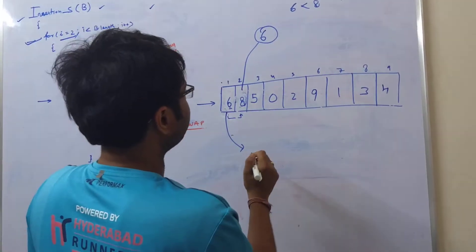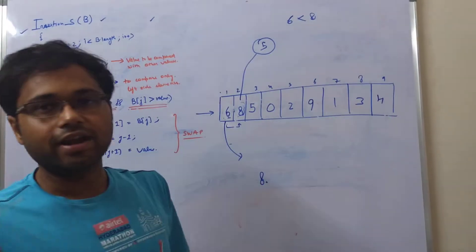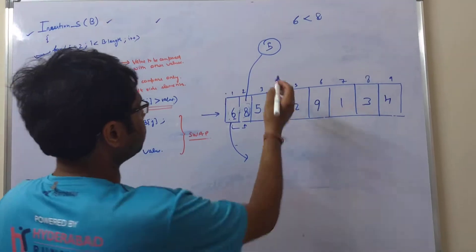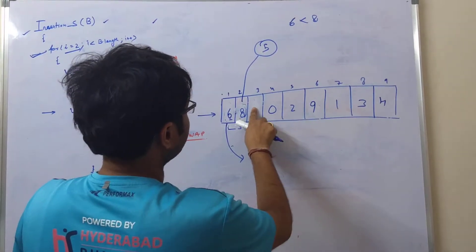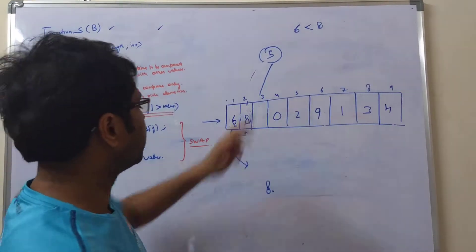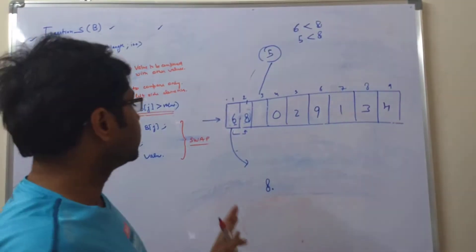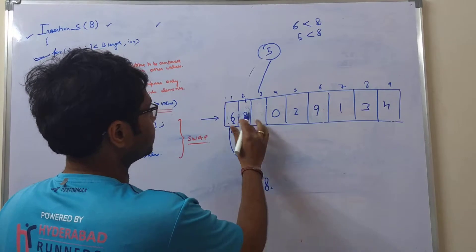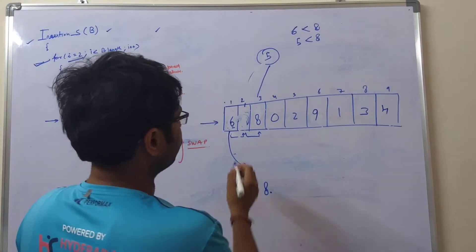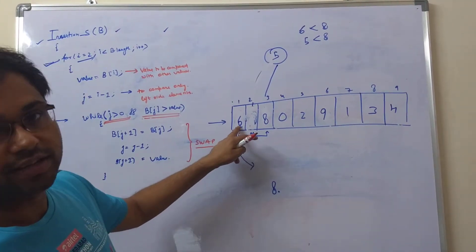Now we take the third number, 5, in our right hand. We will compare it with the already sorted numbers in our left hand. Five is less than 8, so we shift 8 to the right. But we do not place 5 immediately — we also compare it with 6. Five is less than 6 as well, so we shift 6 also. Now the only place for 5 is here. So now 5, 6, and 8 are already sorted.